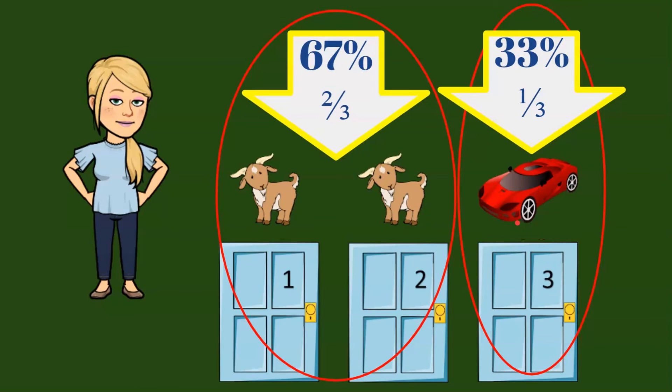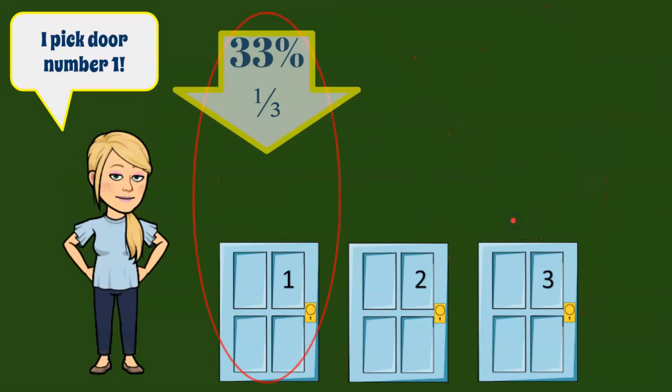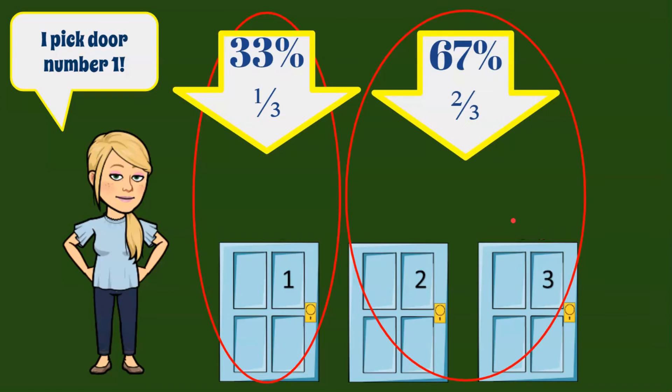So now let's look at the whole idea of I picked door number one. I have a 33% chance of winning the car. If it was behind doors number two or three, there's a 67% chance that the car is behind doors two and three.